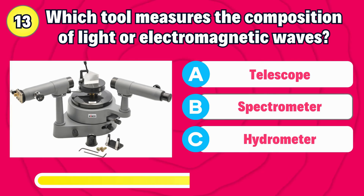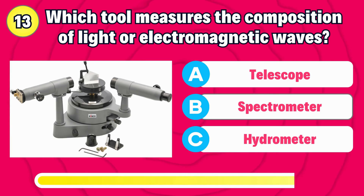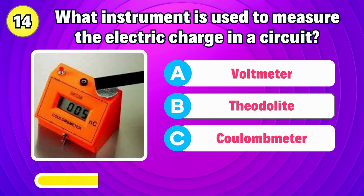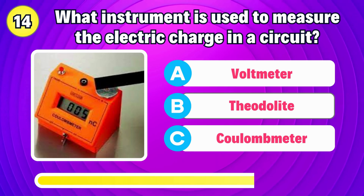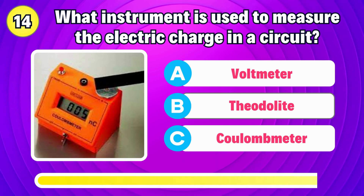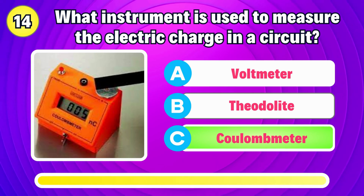Which tool measures the composition of light or electromagnetic waves? Correct, it's spectrometer. What instrument is used to measure the electric charge in a circuit? The answer is coulometer.